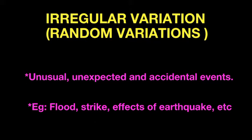For example, irregular fluctuations include events like a strike, a flood, etc. These are what we call irregular fluctuations.